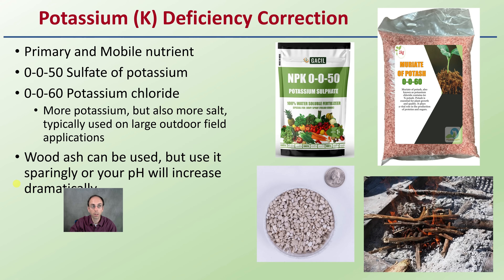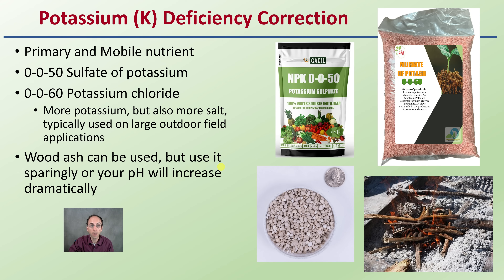To correct a potassium deficiency — it is a primary mobile nutrient. Potassium sulfate is recommended; you could also use potassium chloride, which has more potassium at 60% versus 50%, but it has more salt associated with it and is better for outdoor applications where natural rain can flush it through. Some growers recommend wood ash, but be careful — it will raise your pH dramatically, so use it sparingly.